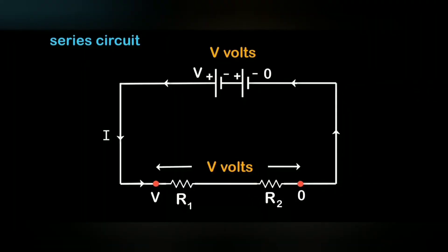Let us have the series circuit. In this circuit there are two resistors R1 and R2 connected in series. We have supplied V volts in this circuit. At one end, that is the positive end, we are having V volts, and at the negative end of the battery it is having 0 volts.